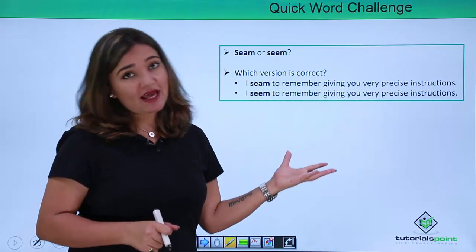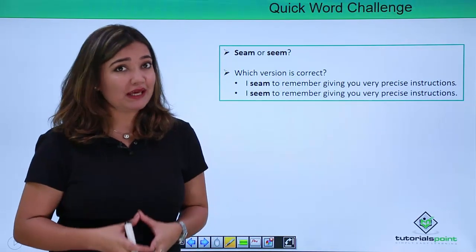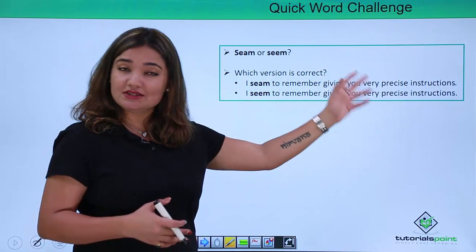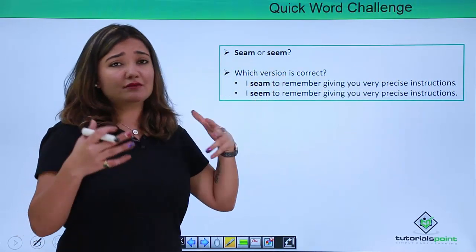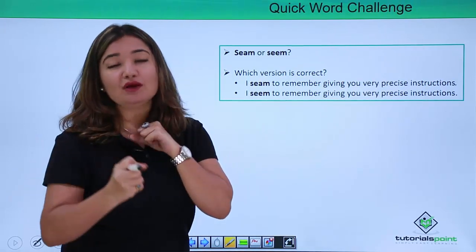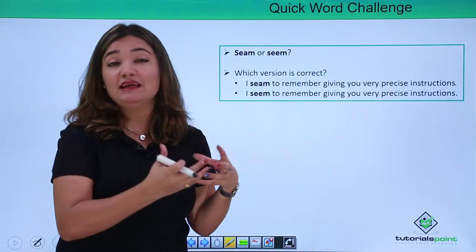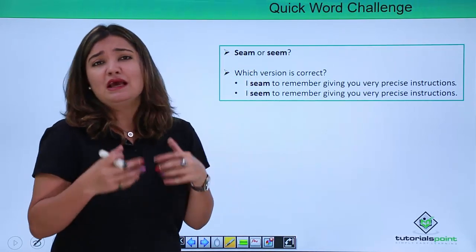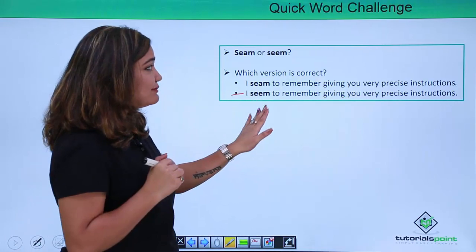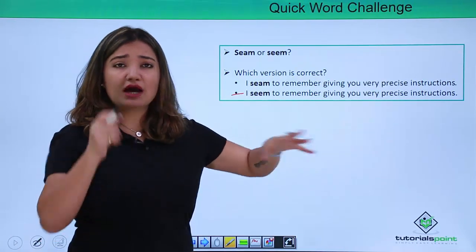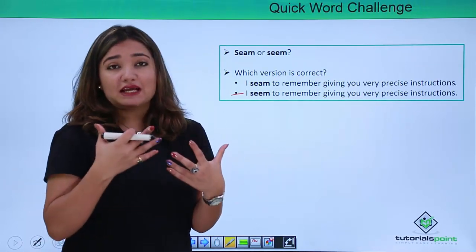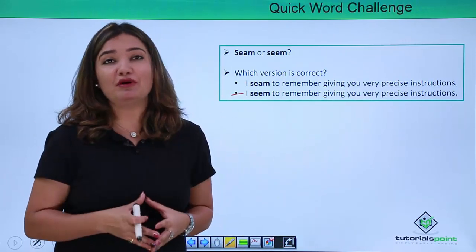Now how about these two words: 'seem' and 'seam'? They are pronounced the same way, but which is the correct usage in the sentence 'I seem to remember giving you very precise instructions'? 'Seam' — as in 'seamless' — means a boundary or a line. But 'seem' means to appear or remember, as in 'I seem to remember what I said.' So here, 'seem' is the right choice: 'I seem to remember giving you very precise instructions' means 'I remember.'